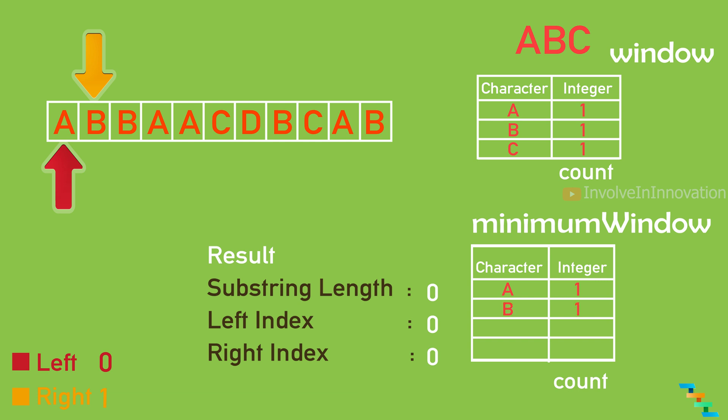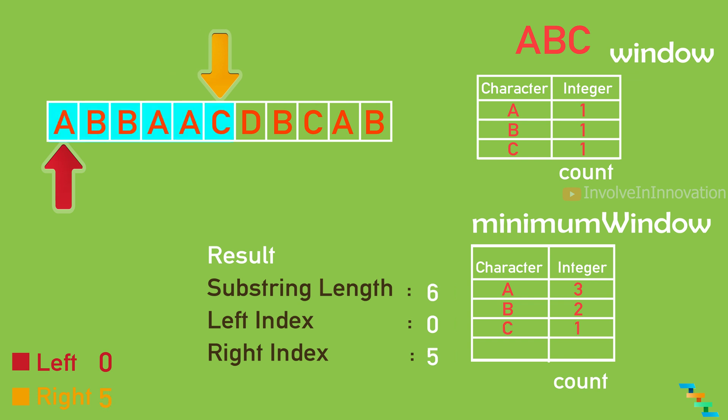Increment the right index — we get 'b'. Add b to the minimum window hash table. Still not matching, so increment the right index again. We get another 'b', so a is 1 and b is 2. Increment again — we get 'a', so a becomes 2. Still not matching. Increment again — we get 'a' again, so a becomes 3. Increment again — we get 'c'. Now a is 3, b is 2, and c is 1, which matches the window hash table.